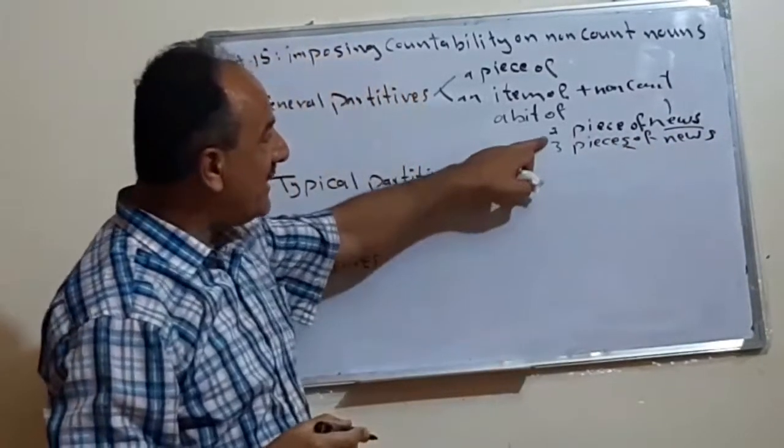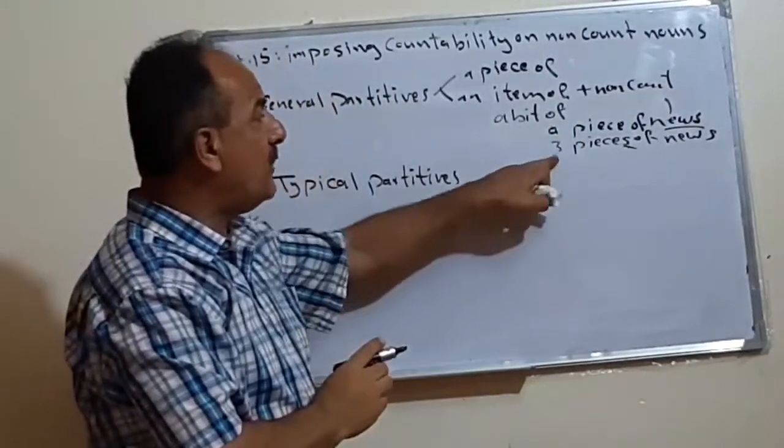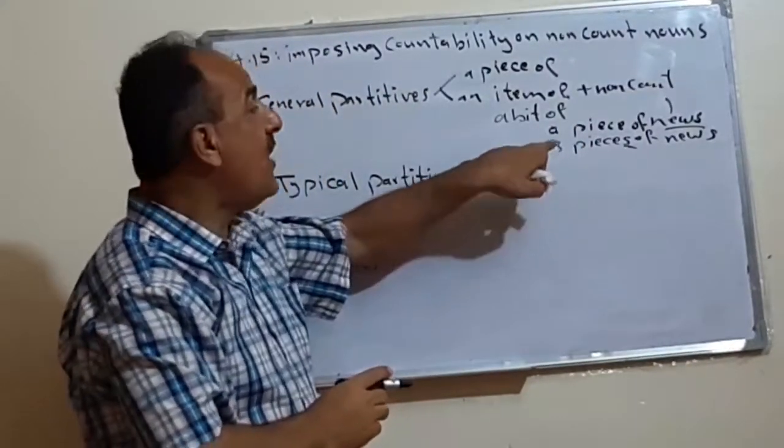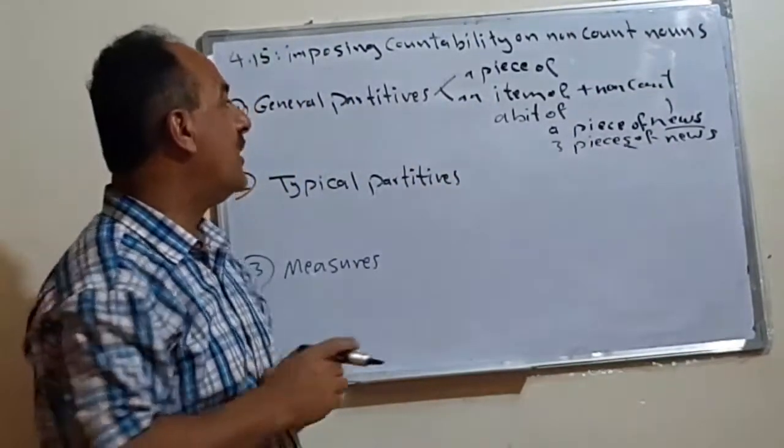See, pieces. We deleted the A, this indefinite article, and we put number three, four, whatever, three pieces of news. If we have, for example, information. Information.